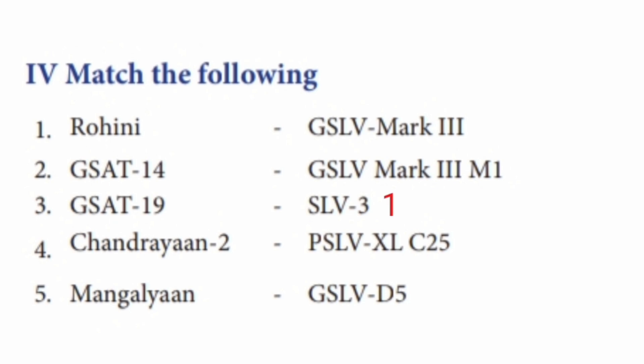Section 4: Match the Following — Satellites and their launch vehicles. GSAT-14 was launched by GSLV-D5. GSAT-19 was launched by GSLV Mark 3. Chandrayaan-2 was launched by GSLV Mark 3-M1. Mangalyaan was launched by PSLV-XL C25.